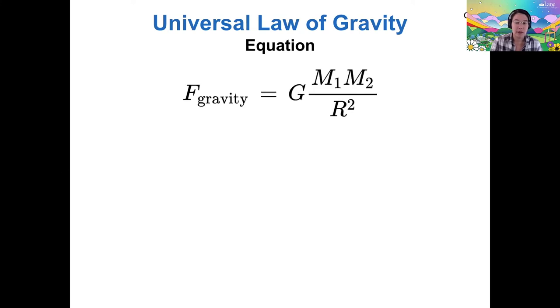All right. So the equation for Newton's law of gravity is this: the force of gravity is equal to this constant G, the universal gravitational constant, times the mass of each object multiplied together divided by the distance between them squared.